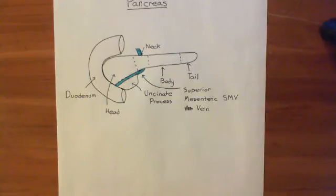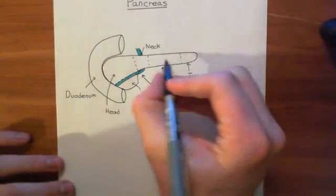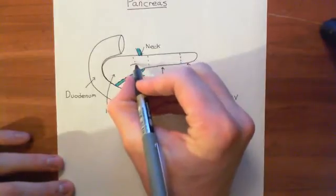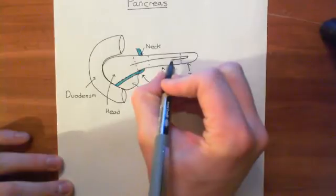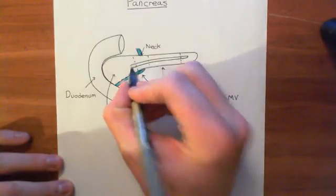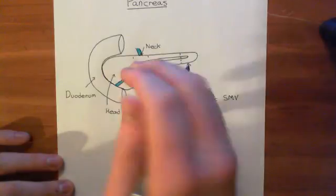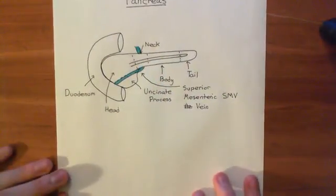Now that we've discussed the superior mesenteric vein and the large structure of the pancreas, what we now need to turn our attention to is the ducts within the pancreas. There is a duct running pretty much the entire way through the pancreas, collecting products from the cells of the pancreas.